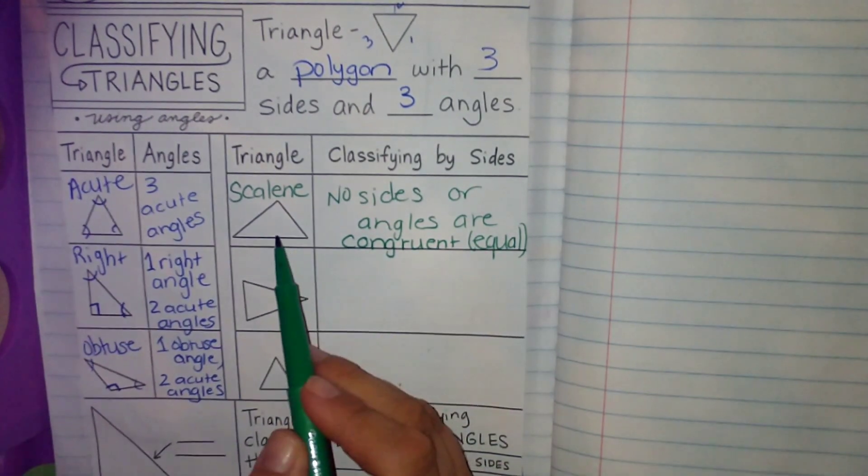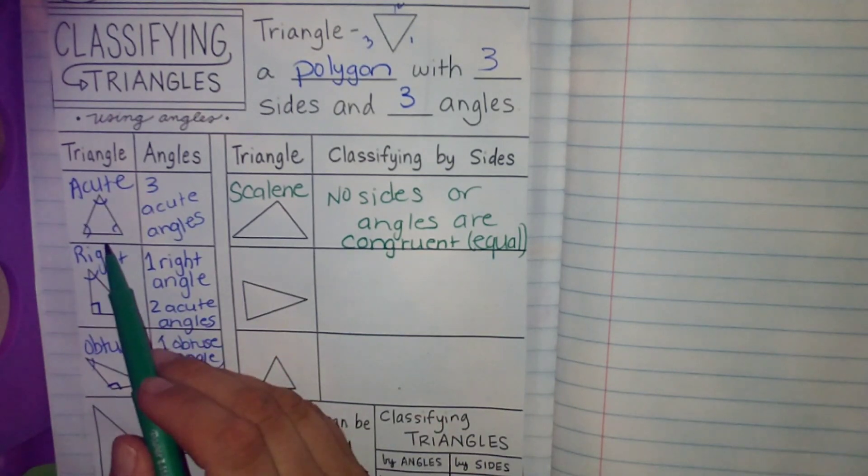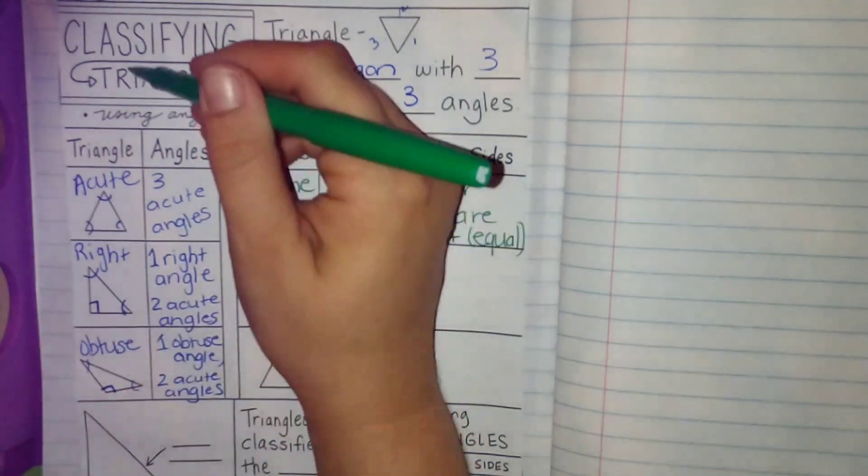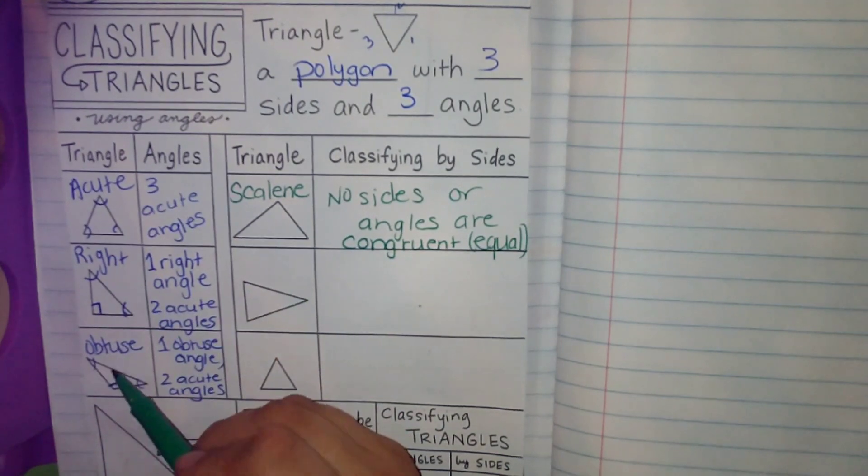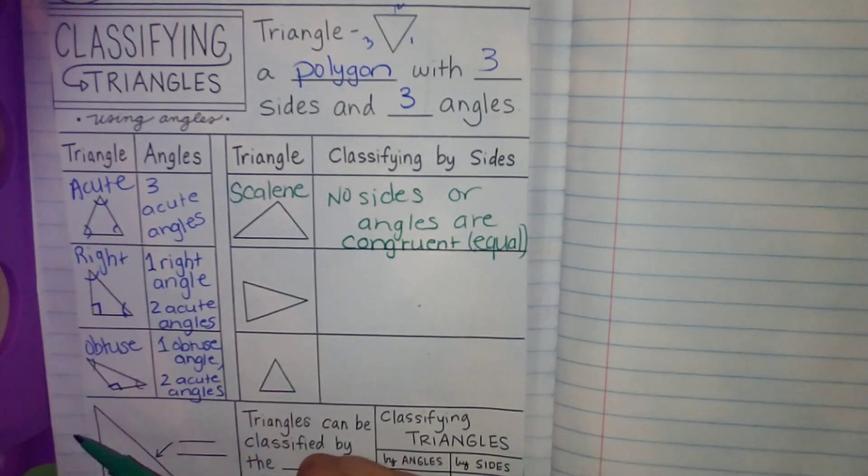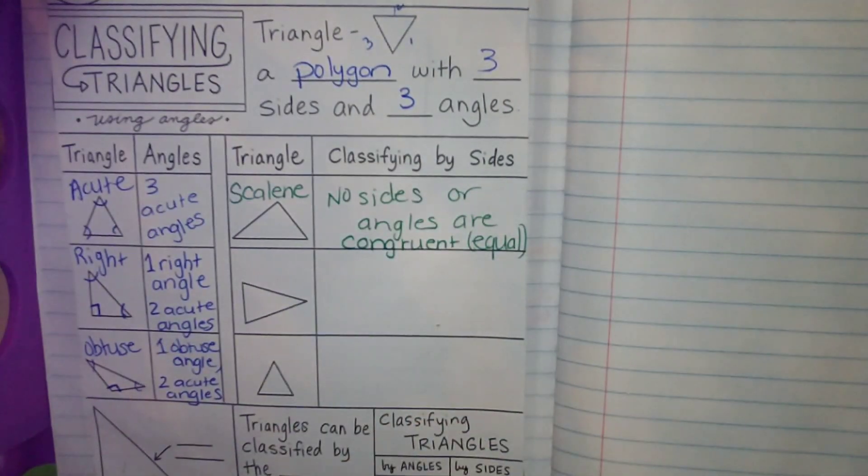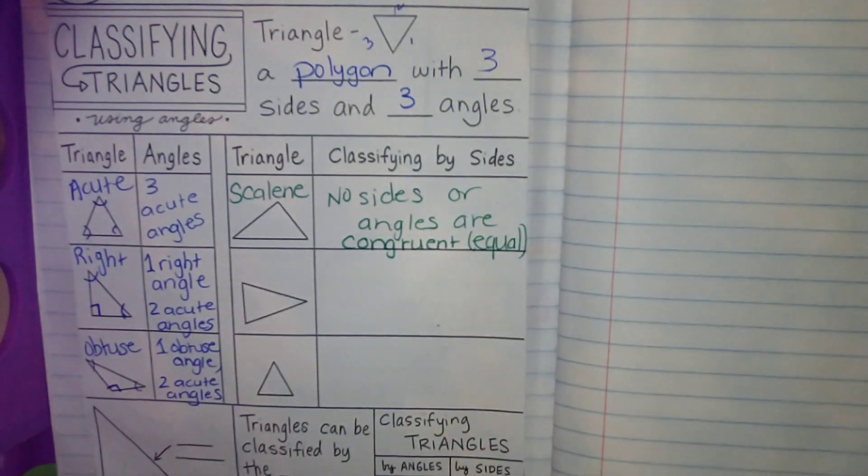So I can have a scalene triangle that is acute. So I would have one of these names, either acute, right, or obtuse in part of my name. And then I would have one of these in part of my name.